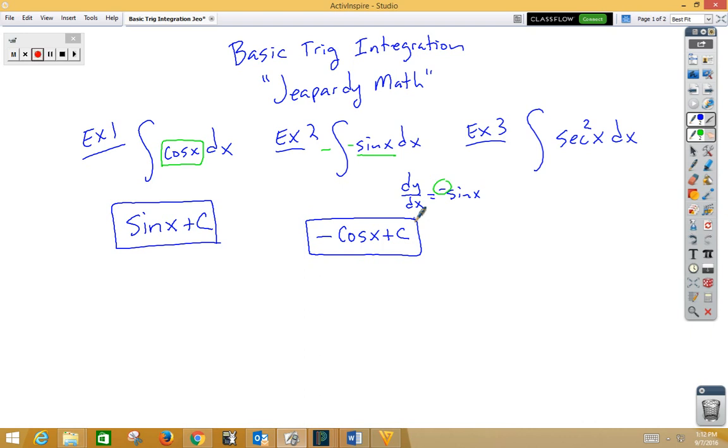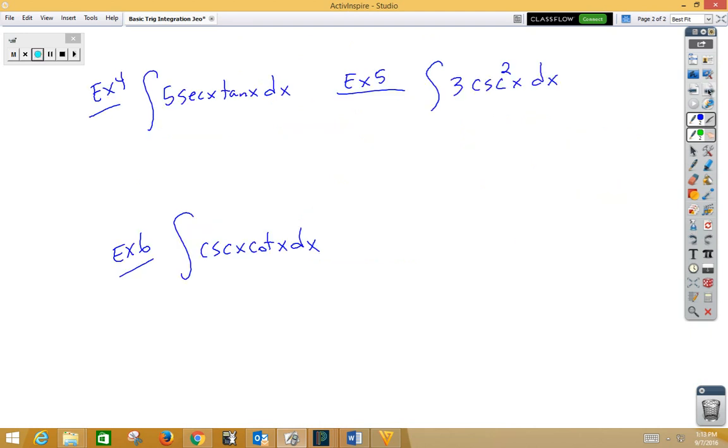In our third example, secant squared. Well, the derivative of tangent is secant squared. So when we integrate secant squared, we get tangent x plus C. Notice I'm giving you the answer. You need the original question. Don't forget your plus C.